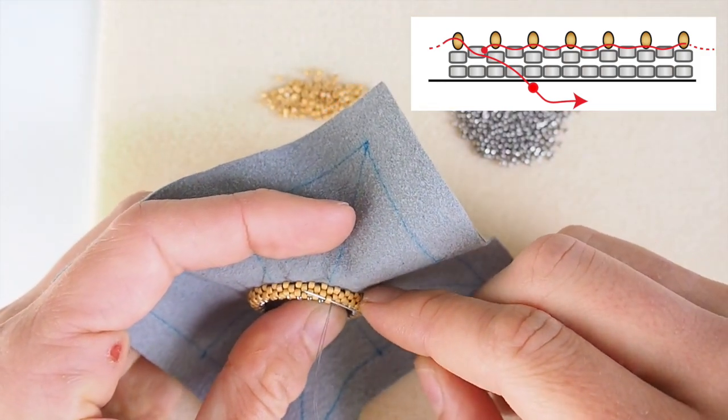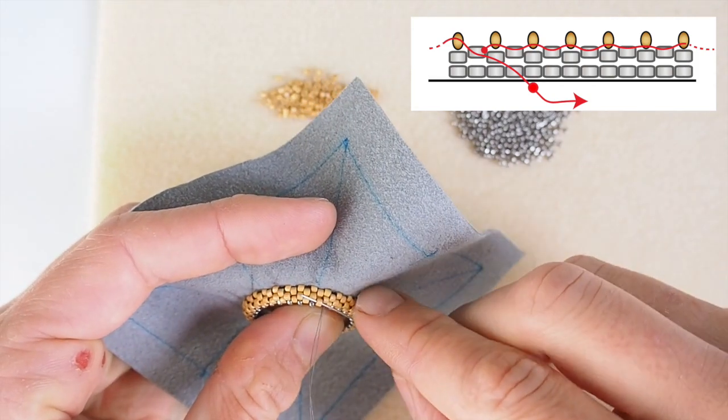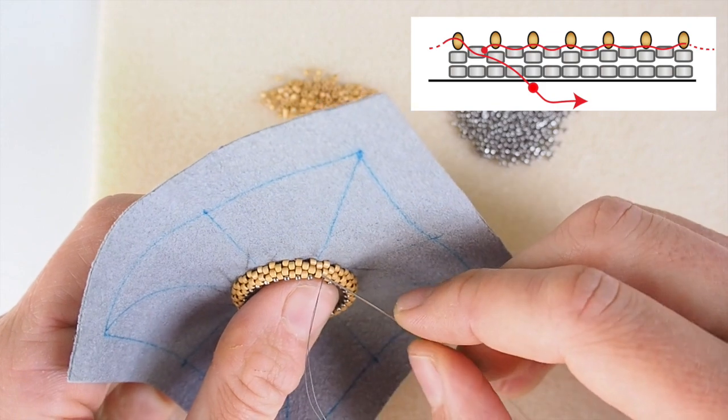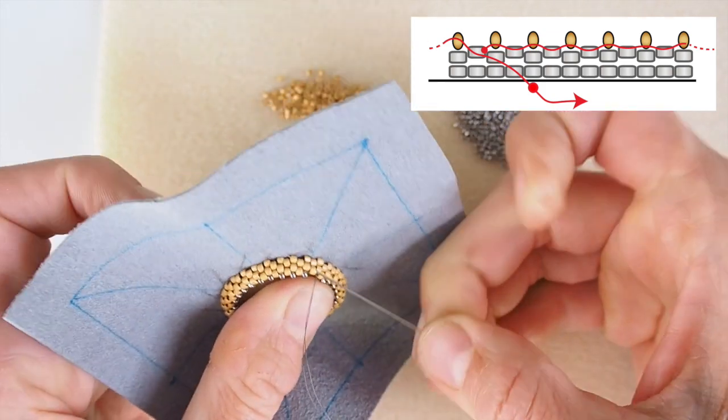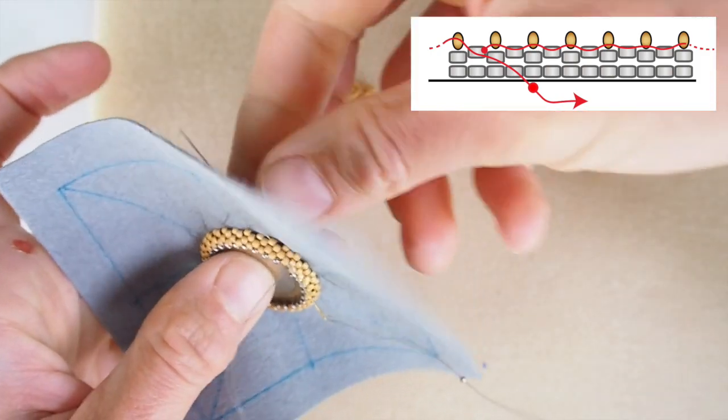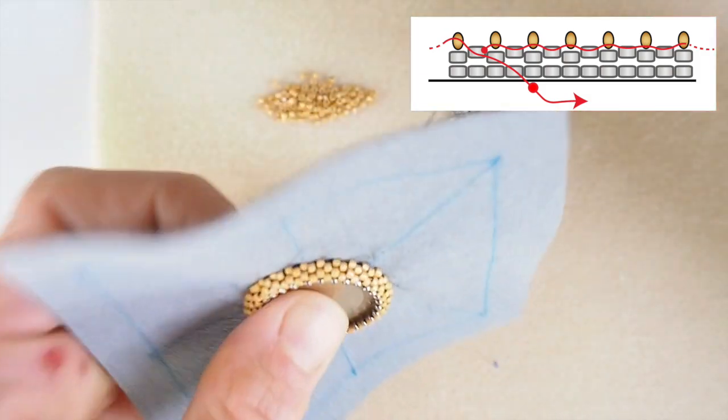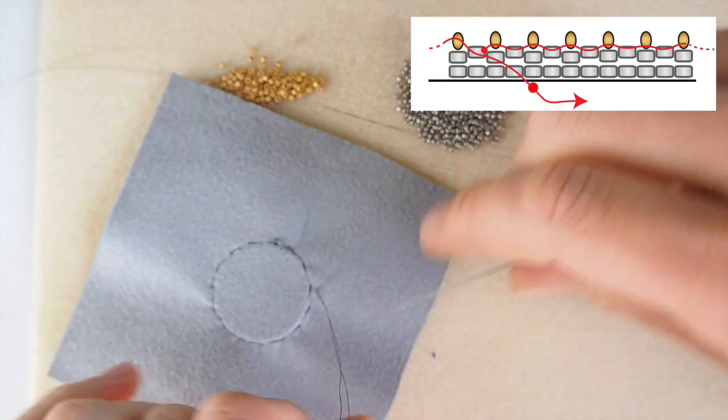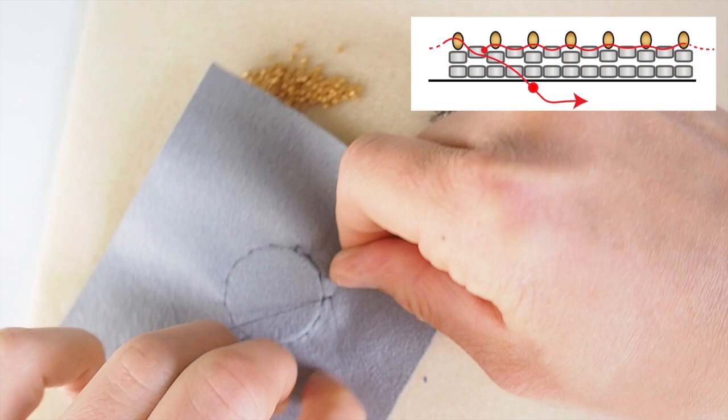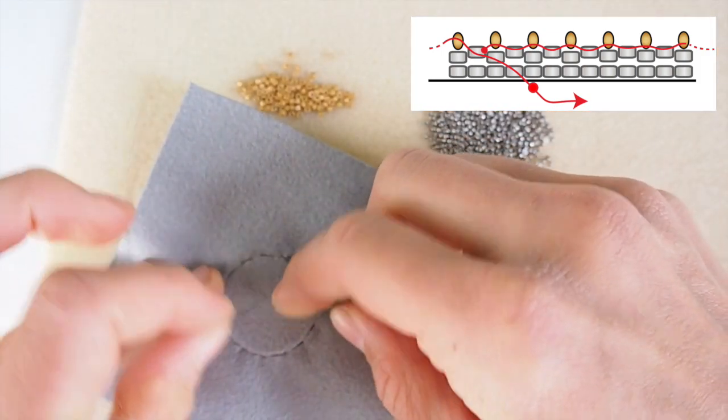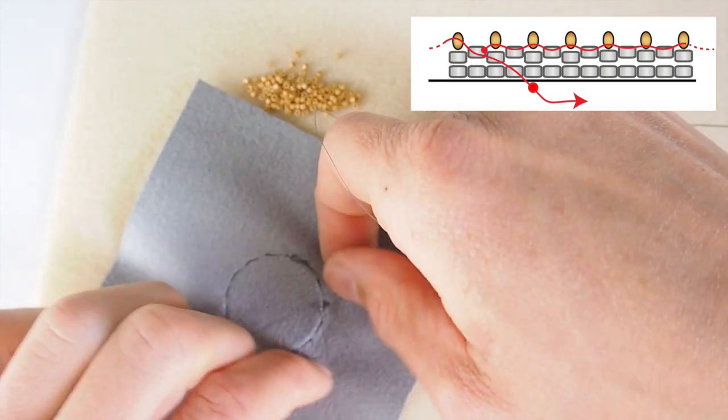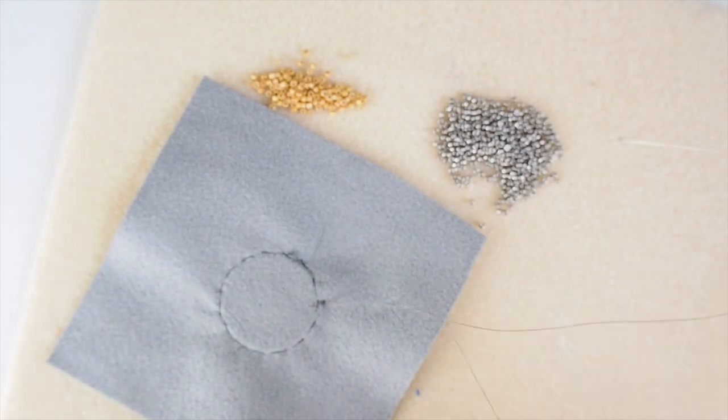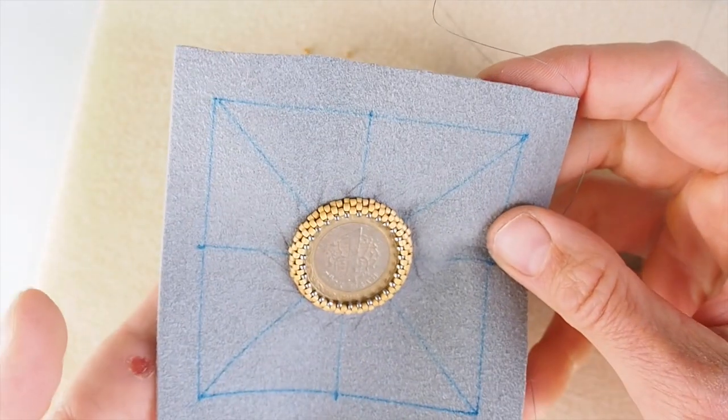To finish off the bezel, instead of stepping up, I will go diagonally through three more Miyuki Delica beads all the way to the foundation, the beading foundation. And I will also bead through the Ultra Suede. I pull my thread and now I'm exiting the Ultra Suede on the back side. Just for some added security, I tie a double knot and another one. So, here it is. The peyote bezel around the coin is done. And this is where we will continue next time.